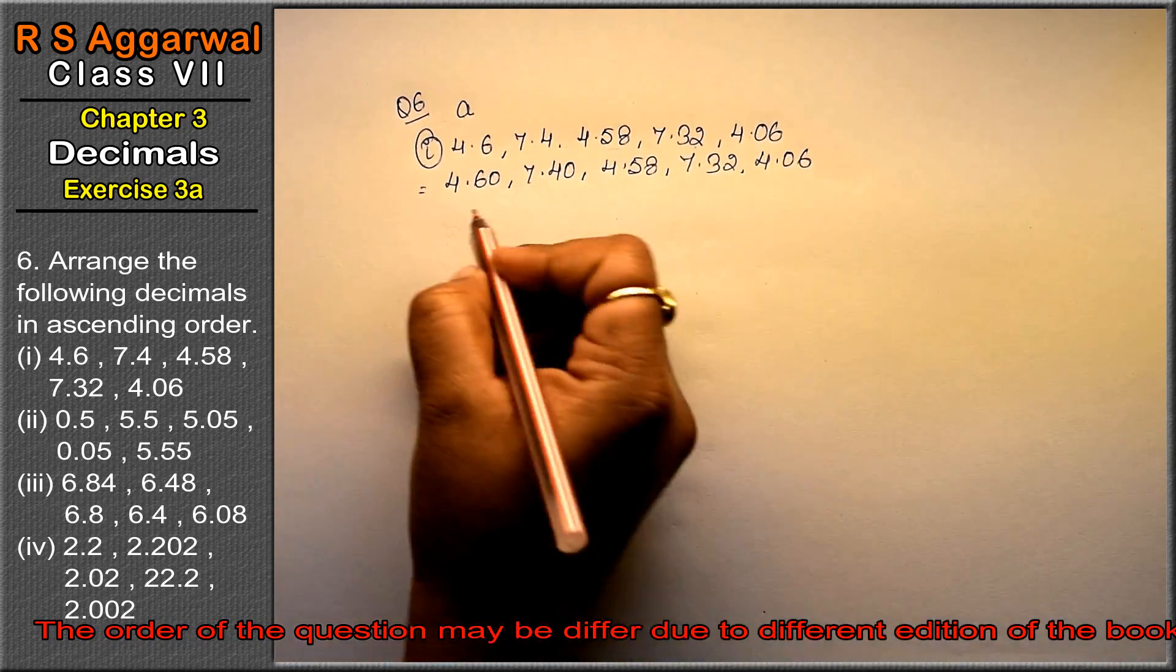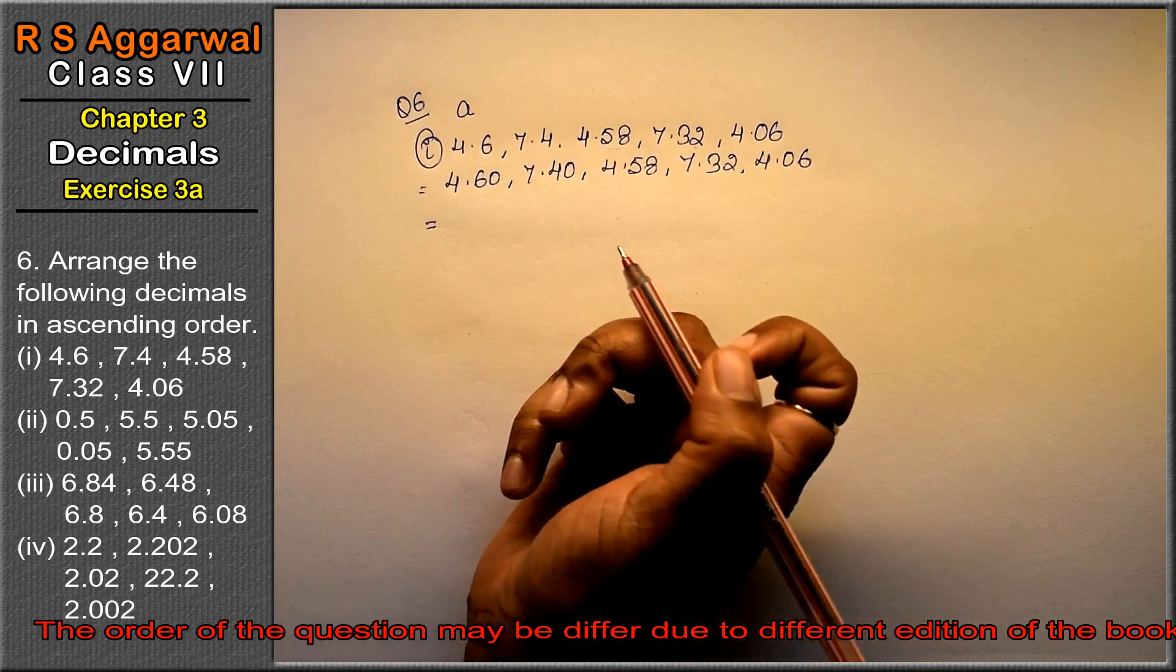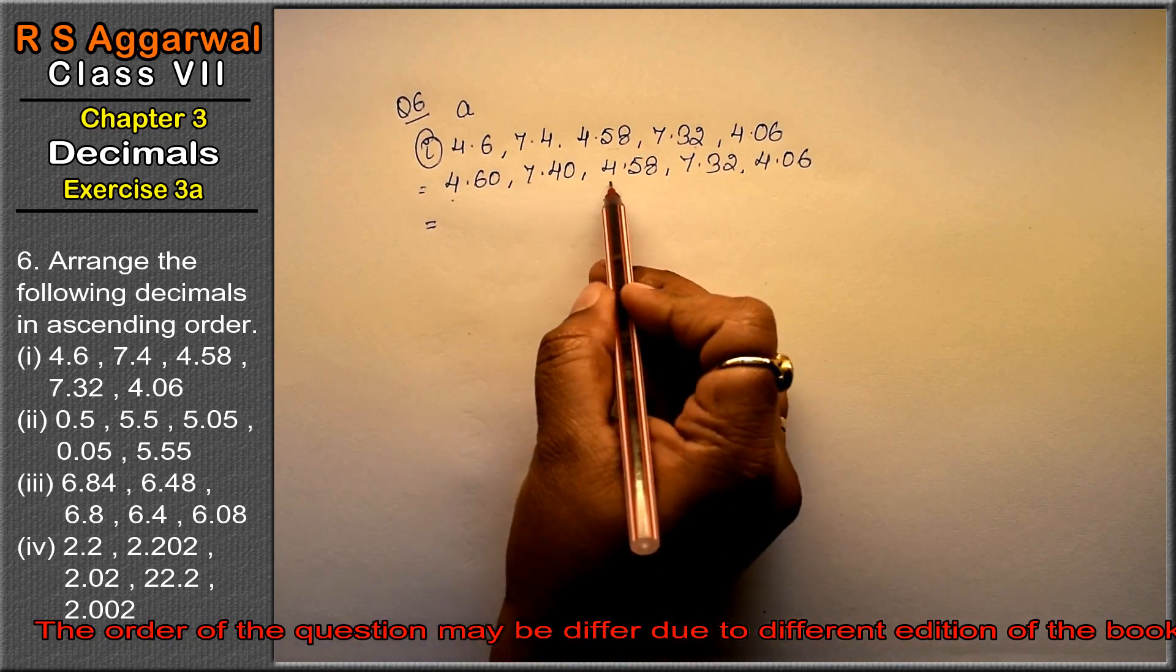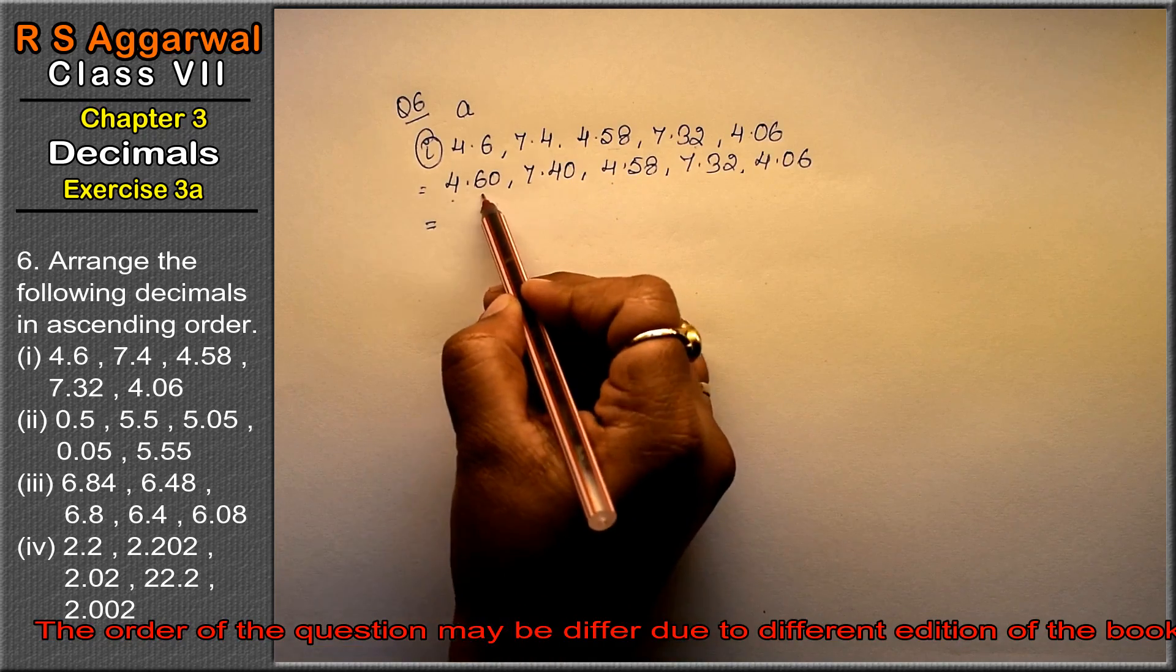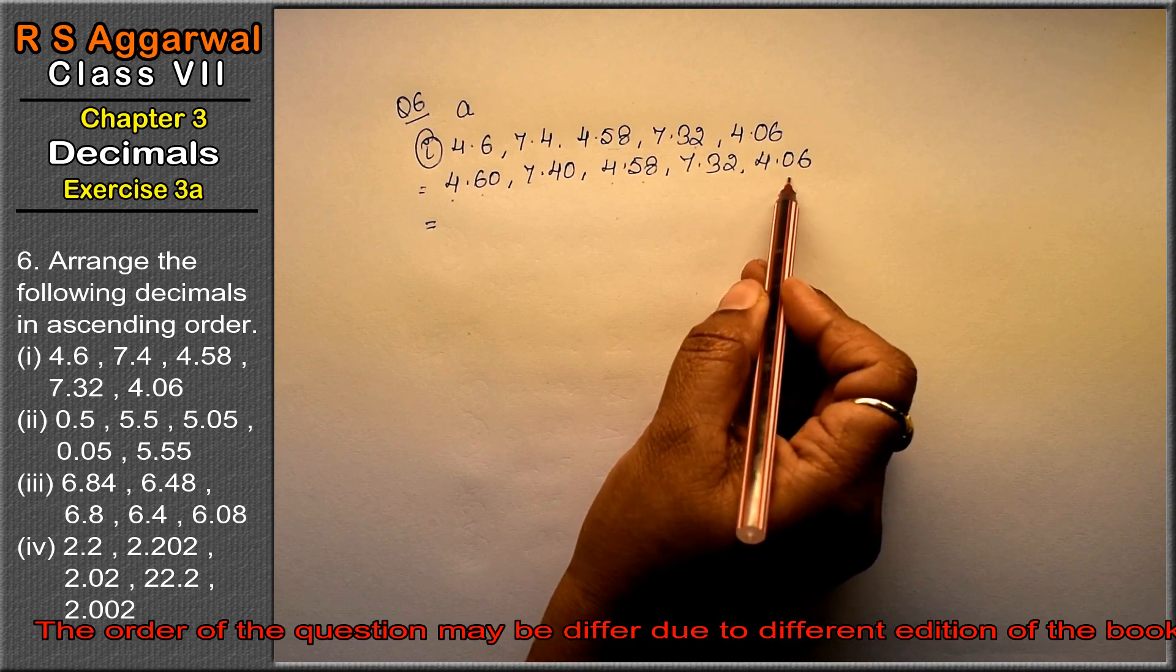Right friends? You can see which is the smallest one? Among the 4s, here is 60, here is 58, here is 06. So this is the smallest one, that means 4.06.